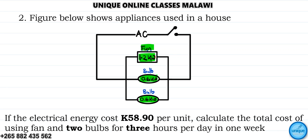If the electrical energy cost K58.90 per unit, calculate the total cost of using the fan and the two bulbs for three hours per day in one week. What's the solution here?